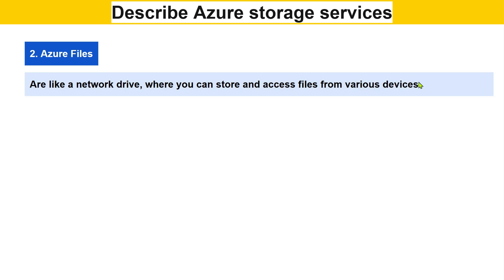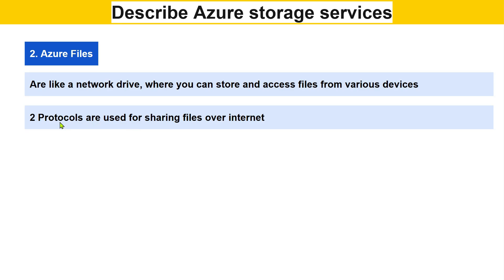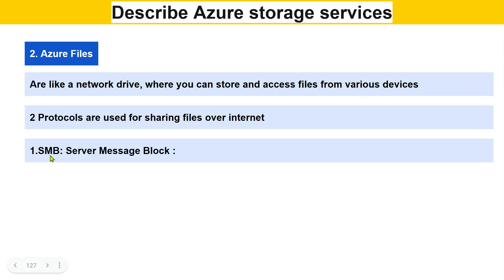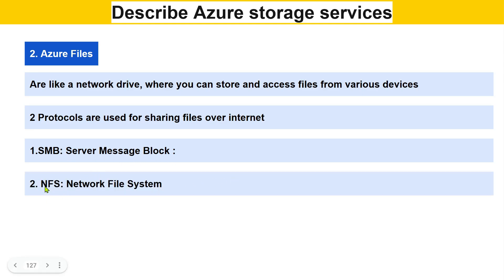Azure Files is similar to Microsoft OneDrive — a network drive service to store and access files from various devices. There are two protocols used for sharing or accessing files over the internet: SMB (Server Message Block) and NFS (Network File System).